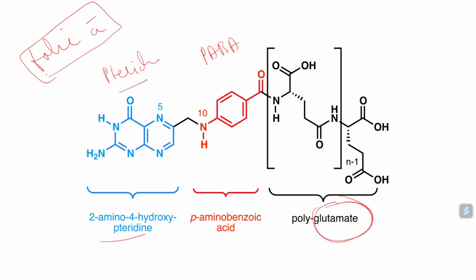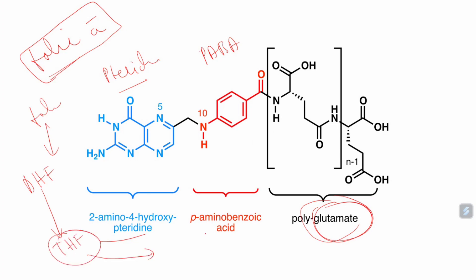Always remember — folic acid obtained from bacteria, fungi, plants, and other animals is in the form of polyglutamates. It is not available directly as folates. These polyglutamates, when taken through the oral route, are transferred from the mucosal layers, and in the body, they convert into dihydrofolate, then into tetrahydrofolate. This tetrahydrofolate is important in activating vitamin B12, and in forming purines and pyrimidines for synthesis purposes.